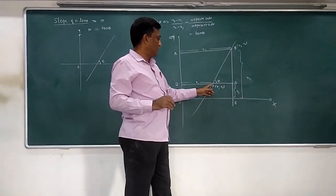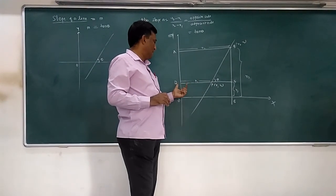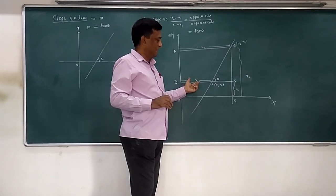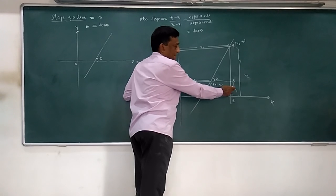Now if you talk about point P, its coordinates are x1, y1. So distance of P from y-axis, that is length PD, is x1. And distance of P from x-axis is nothing but y1.